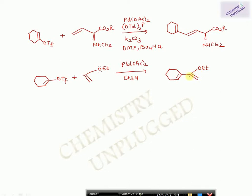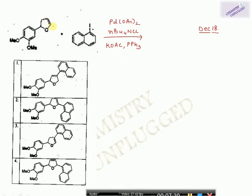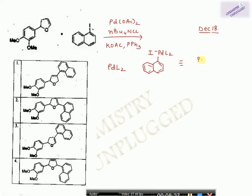Now we will take questions. This question is from December 2018. We have an alkene and an aryl iodide. The first step is the oxidative addition reaction of this iodide with the palladium complex PdL₂. This gives us the oxidative addition product, which I can write as Ar-Pd(L₂)-I.